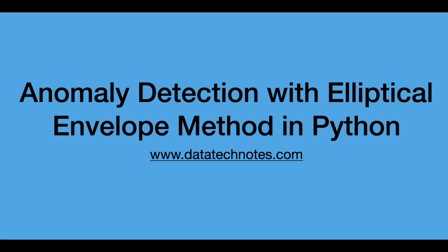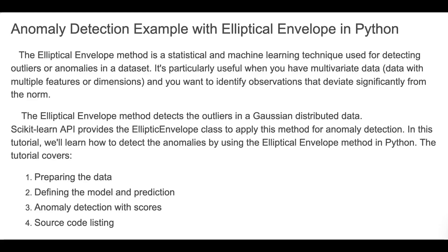Hello and welcome back to my channel. In this tutorial, I'm going to explain an anomaly detection example with the Elliptical Envelope method in Python. The Elliptical Envelope method is a statistical and machine learning technique used for detecting outliers in a dataset. It's particularly useful when you have multivariate data and you want to identify observations that deviate significantly from the normal data.